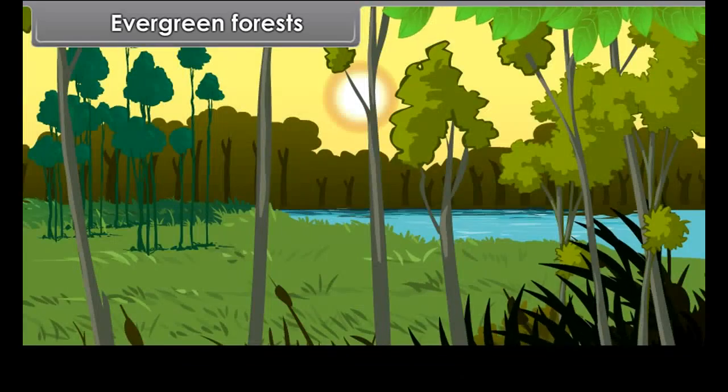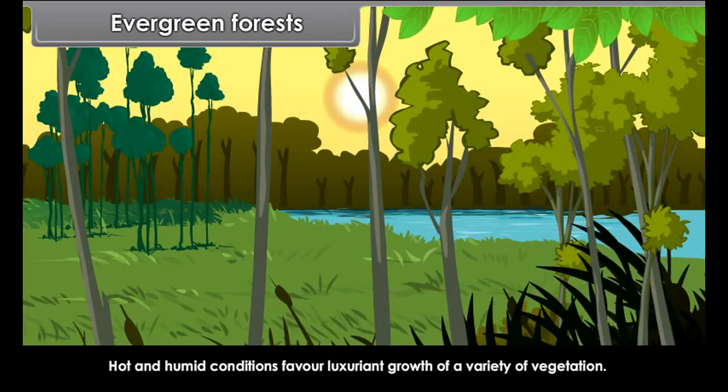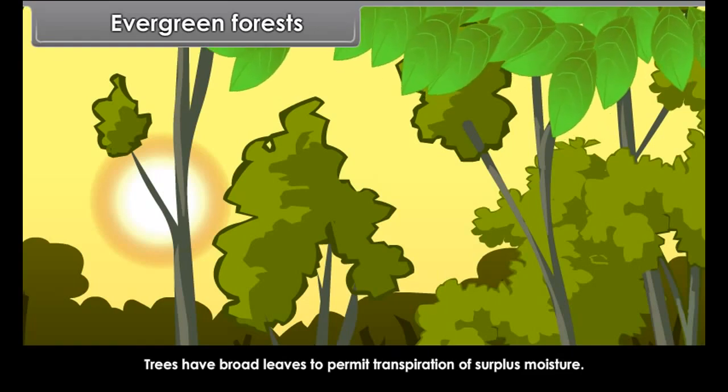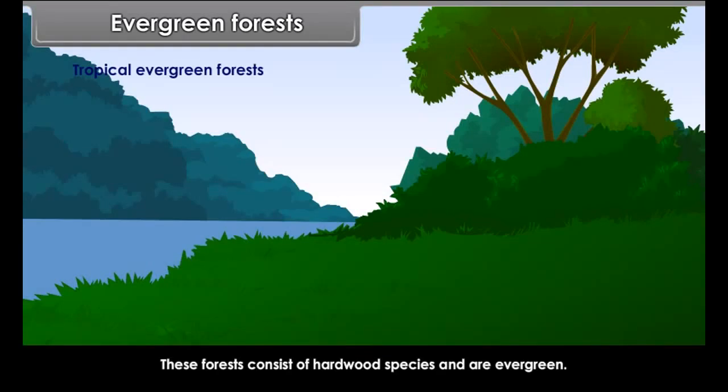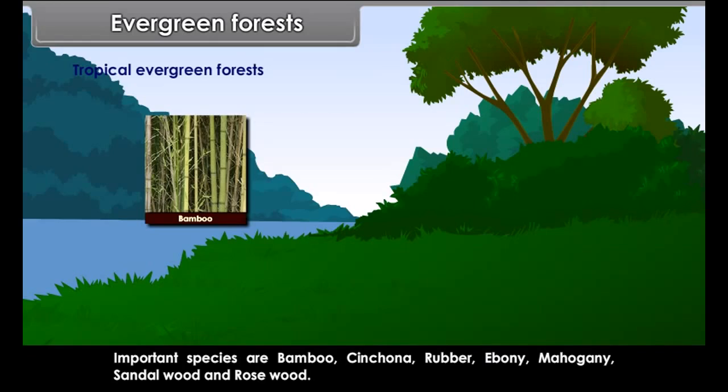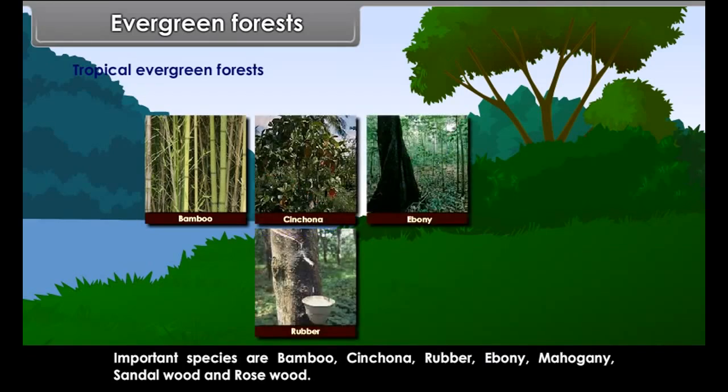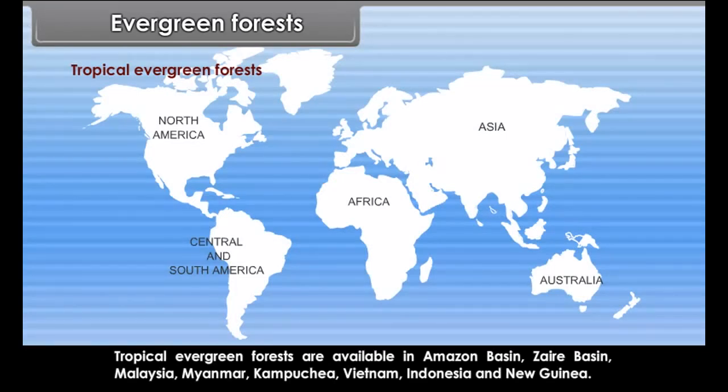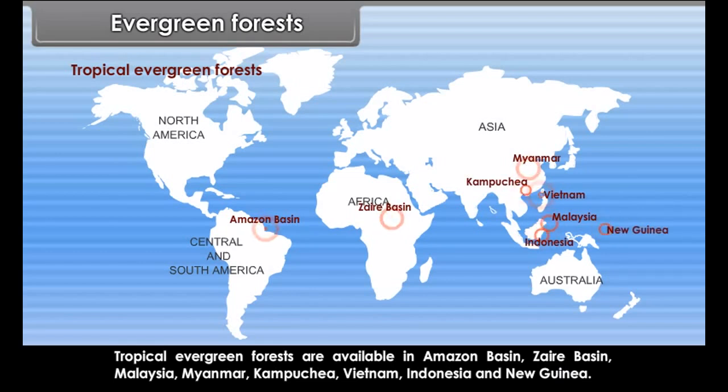Forest types. Forests make the bulk of our natural vegetation. Forests are found from the equator to the areas beyond 60 degrees north and south. But the types of trees found in these forests vary depending upon the range of temperature. Forests are classified broadly into evergreen and deciduous forests. Evergreen forests: Trees in these forests do not shed their leaves simultaneously during any season of the year. Evergreen forests may also be grouped into tropical evergreen forests, mid-latitude evergreen forests, Mediterranean and coniferous forests.